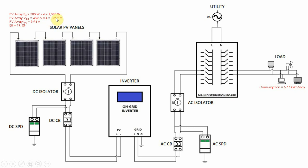The current flowing through these panels is 9.94 amps, which will also be the input current to our on-grid inverter. In step three, we determined the rated power of the inverter by taking the maximum output of our solar PV array — 1,520 watts — and based on this we choose an inverter with a sufficient power rating. In this example, we choose a 2,200-watt inverter.